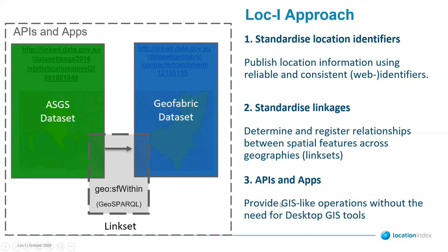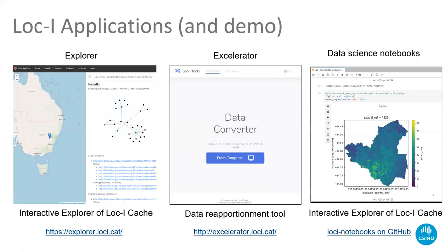Every data set gets a set of web identifiers, which then get published on the web. When you have a thing linked to another thing and many things, you start to get a network — a data graph. There are also APIs that provide GIS-like operations without the need for desktop GIS tools.